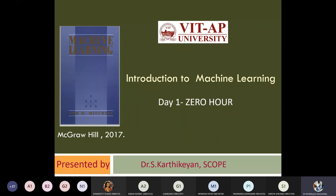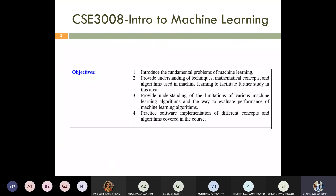A very pleasant evening to everyone. I'm very happy to see you all back in this machine learning class. Today is the first class, so instead of directly jumping into topics we will start with the basics. The subject code is CS3008, Introduction to Machine Learning. This is a four-credit subject: three hours per week for theory and two hours for lab, making four credits total.